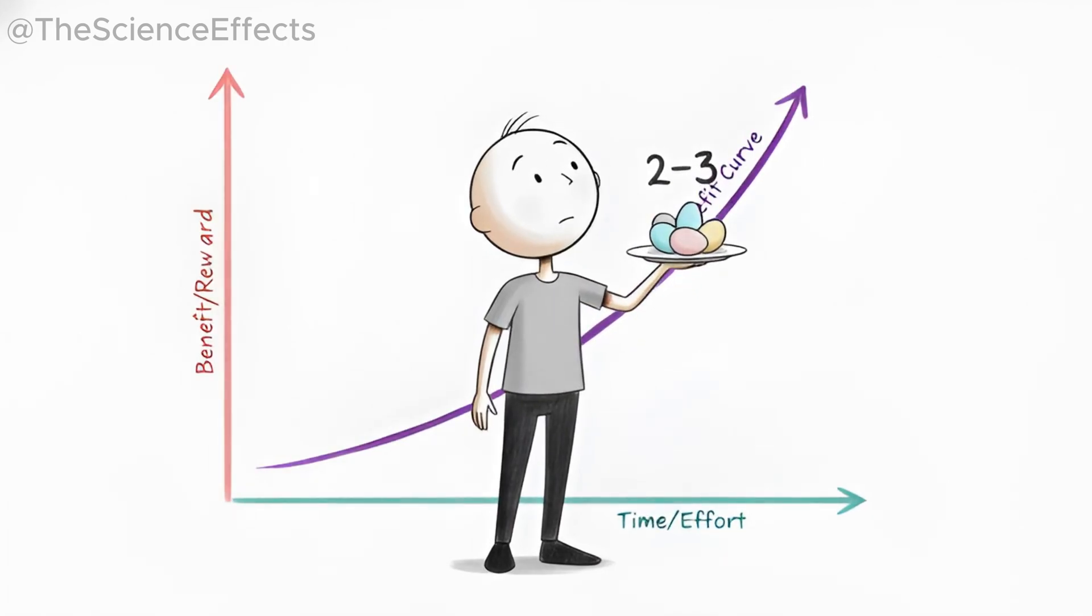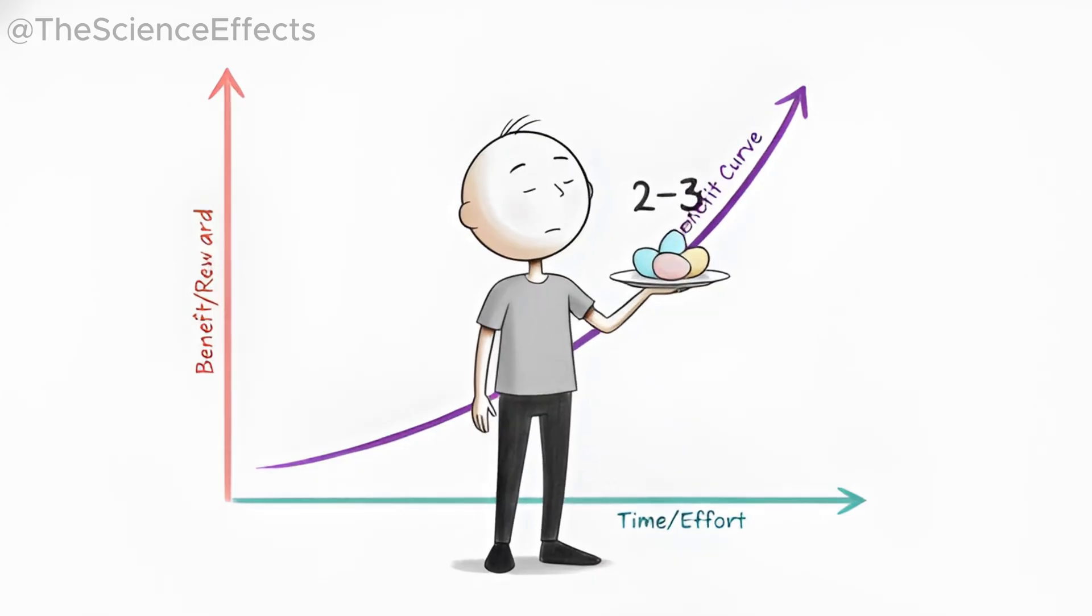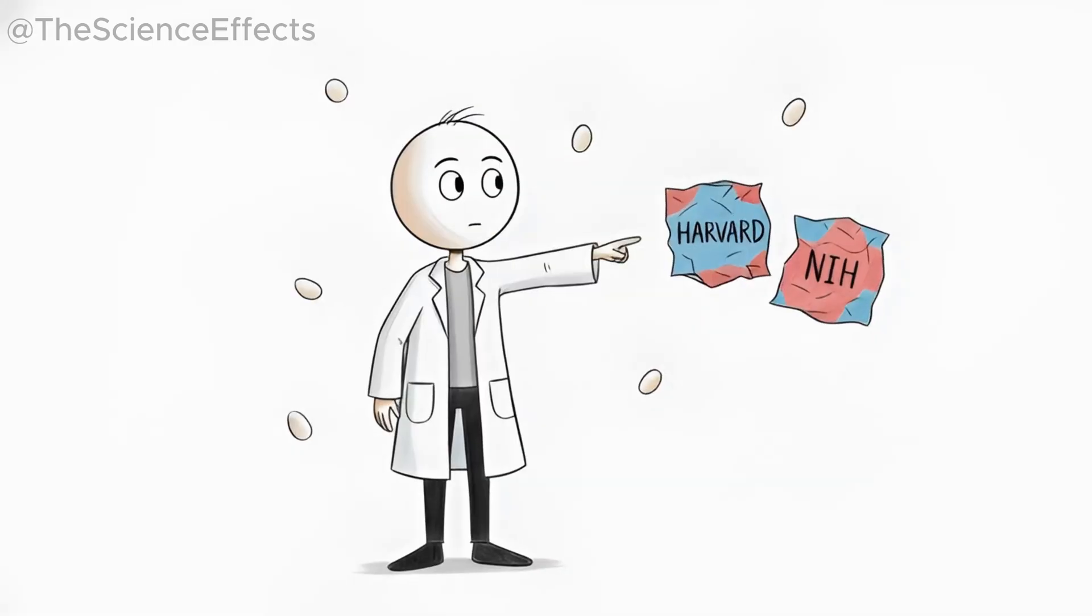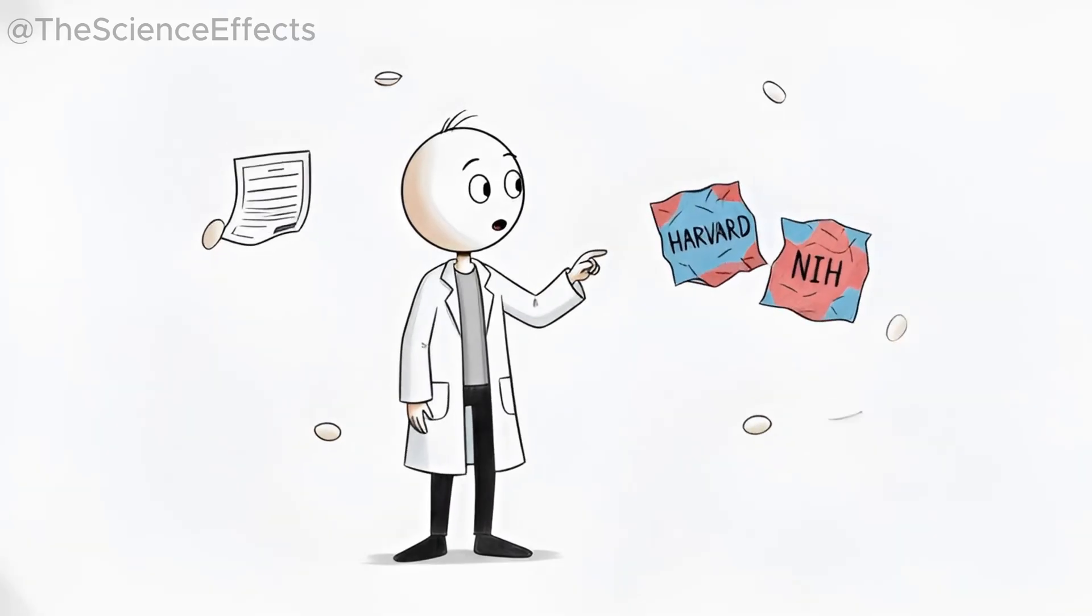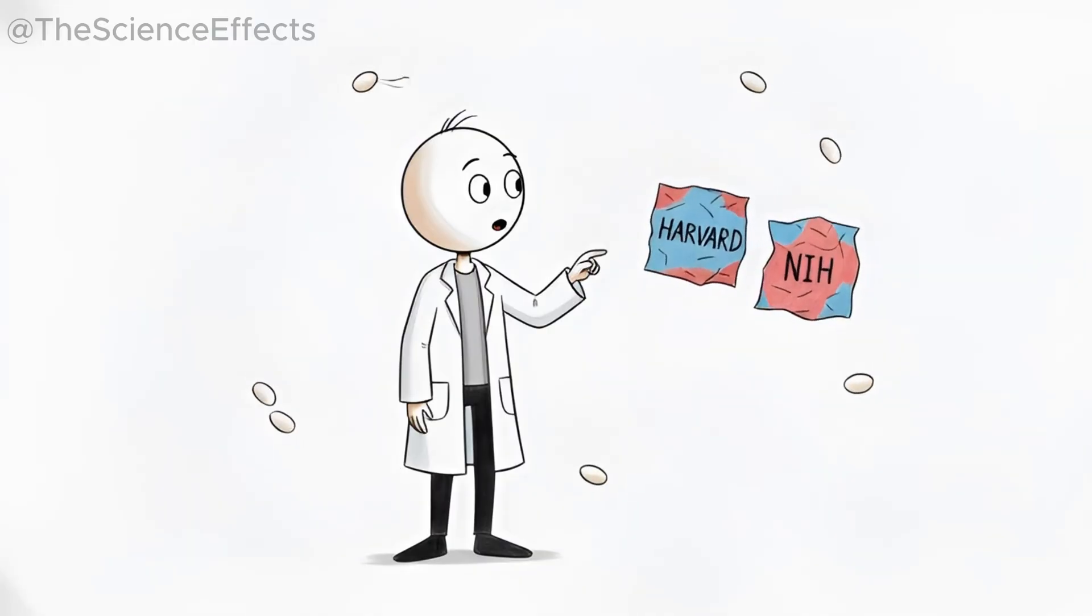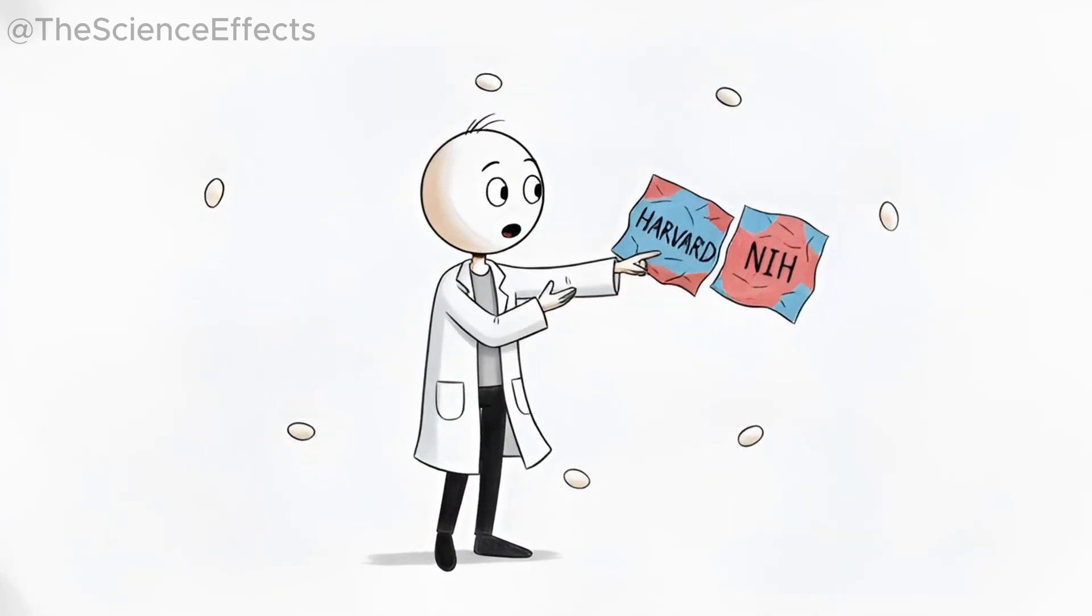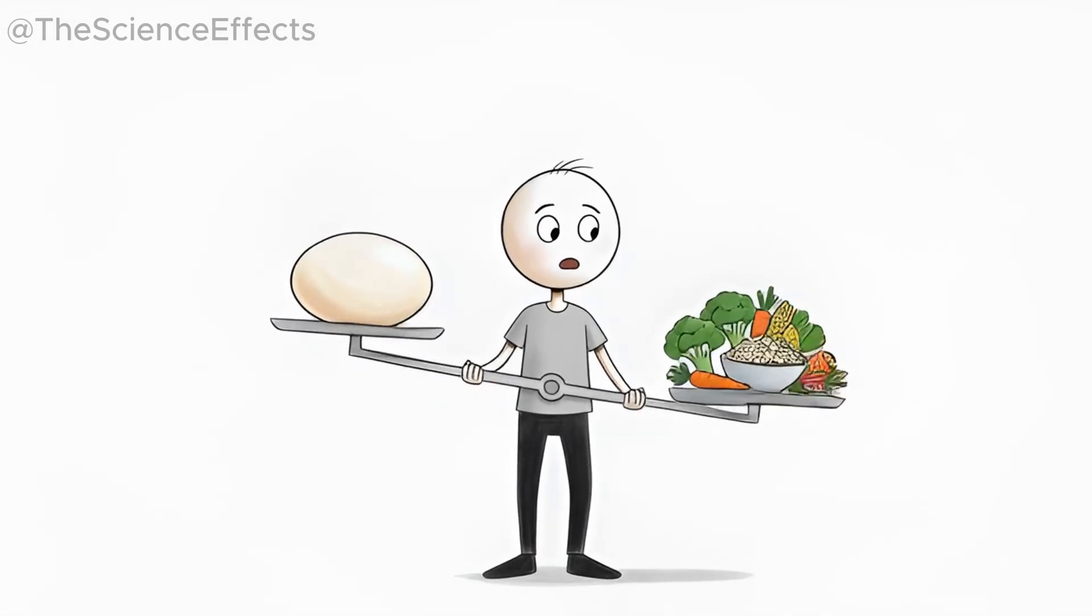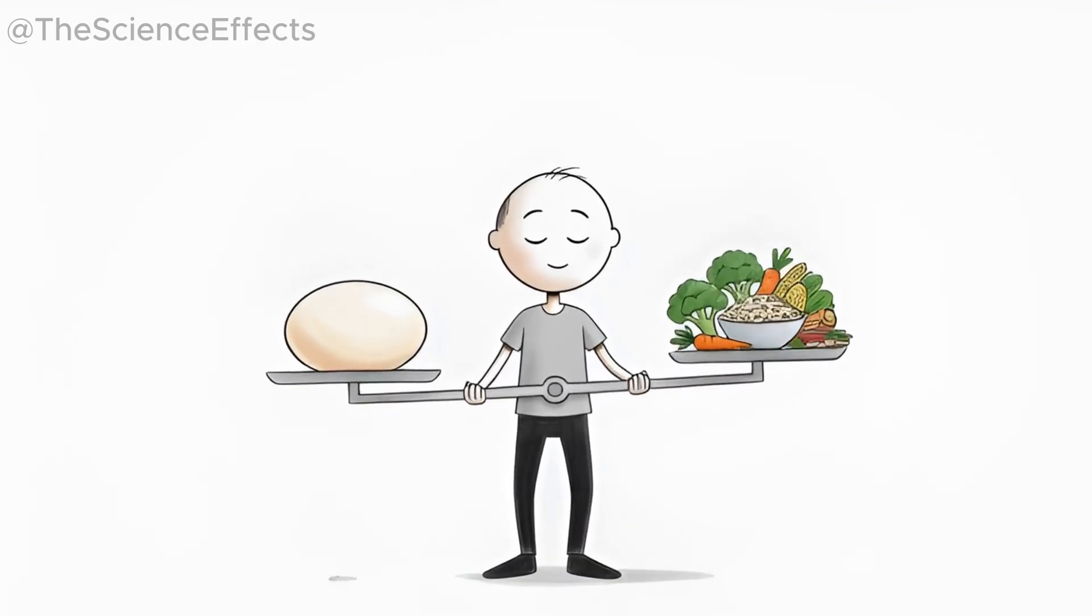Most people thrive on two to three eggs per day. This is the sweet spot, supported by multiple studies. Harvard's decades-long research confirms that up to one egg per day has neutral or beneficial effects for heart health. NIH data shows that two eggs daily dramatically increase choline levels. But the magic isn't in perfection, it's in balance.